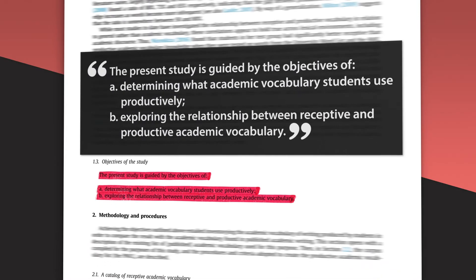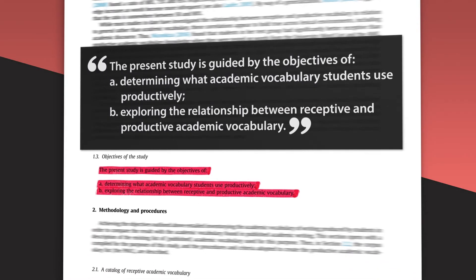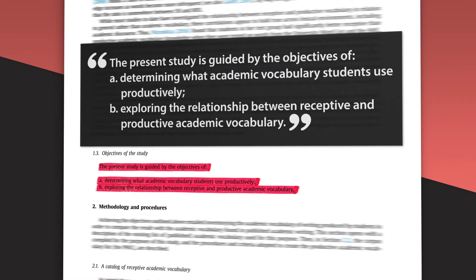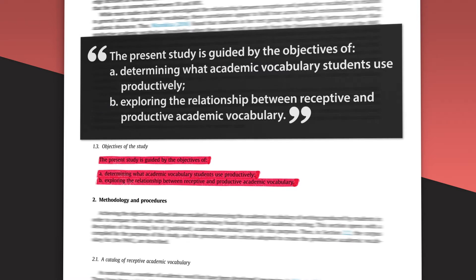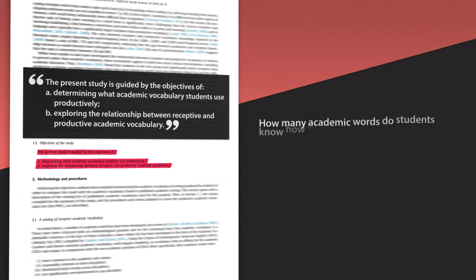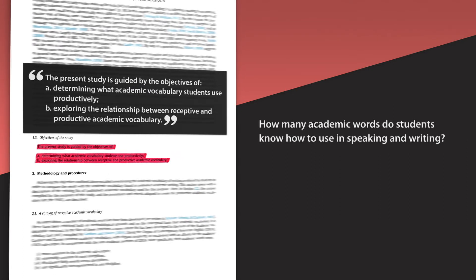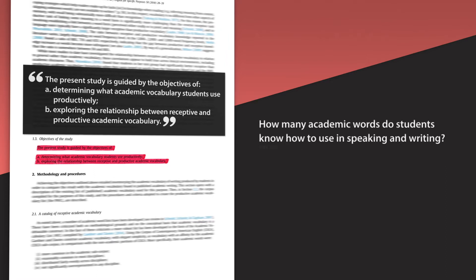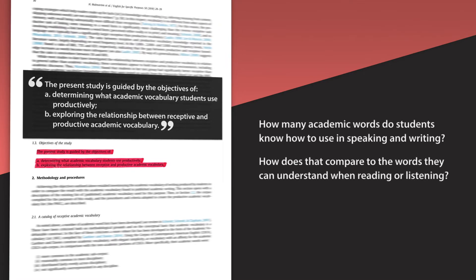At the end of the introduction, we learn the specific objectives of this study: 'The present study is guided by the objectives of determining what academic vocabulary students use productively and exploring the relationship between receptive and productive academic vocabulary.' In other words, the researchers are asking how many academic words students know how to use in speaking and writing, and how that compares to the words they can understand when reading or listening.